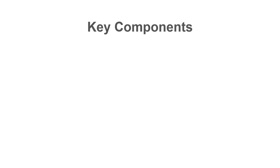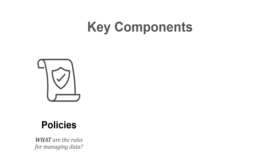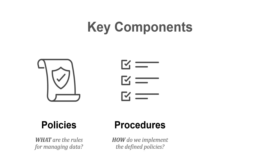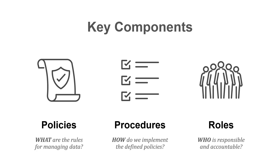There are three component pieces of data governance. There are policies — so what are the rules for managing the data? There are processes — how do we implement the defined policies, how do we implement those rules? And then roles — so who is responsible and accountable?